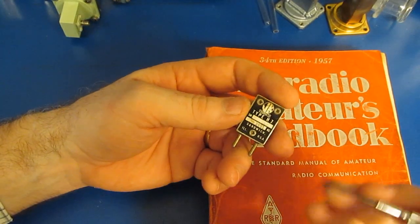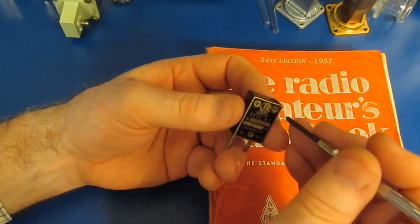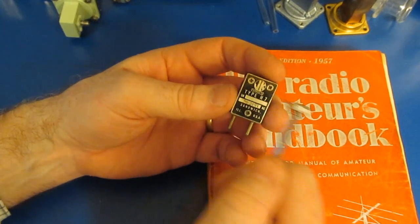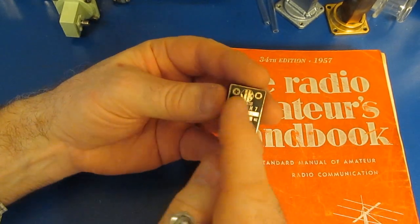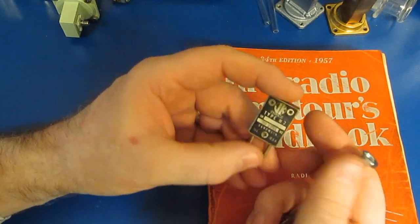Back when I had an amateur radio license, the novice class wasn't allowed to use a VFO or variable frequency oscillator. Everything had to be crystal controlled. So it was common for novices to have several of these crystals depending on what frequency that they wanted to operate on.